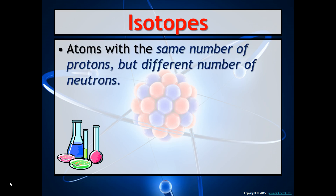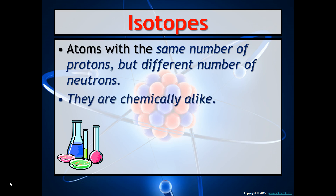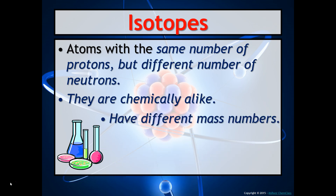Isotopes are atoms with the same number of protons but a different number of neutrons. The number of protons cannot change, so that's why only the neutrons will vary. Isotopes are chemically alike, meaning they behave similarly in chemical reactions. They have different mass numbers, because the mass number is protons plus neutrons, and the neutrons differ between isotopes.